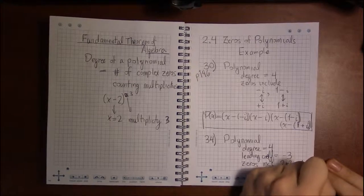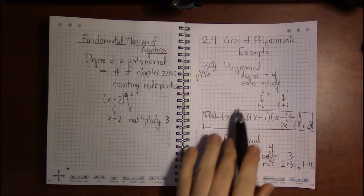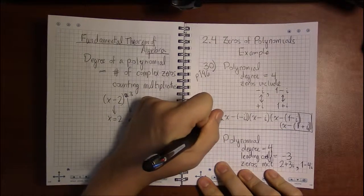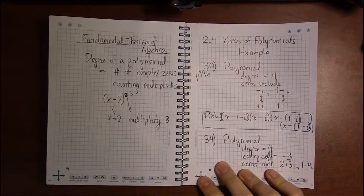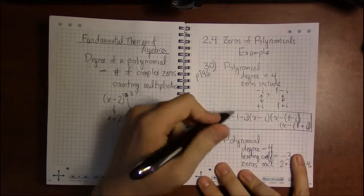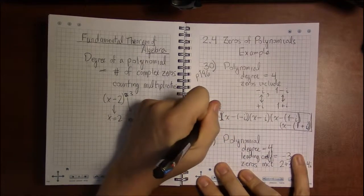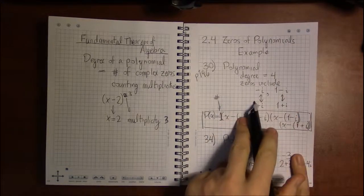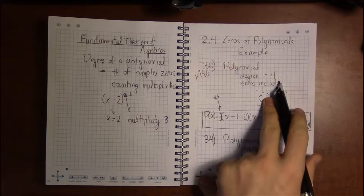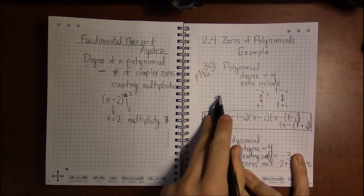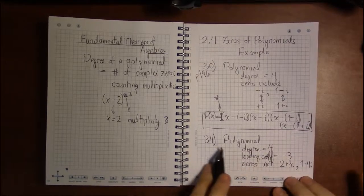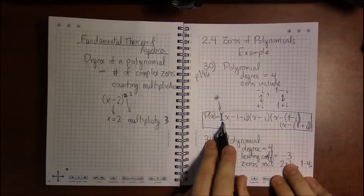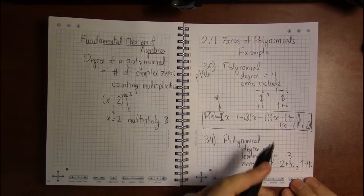Before, our leading coefficient was just one, and since we had no condition on it, we could have put any number we wanted. It would still be degree four with the same zeros, just a different leading coefficient. In this case we're going to start off our factorization with minus three, but everything else will be the same.